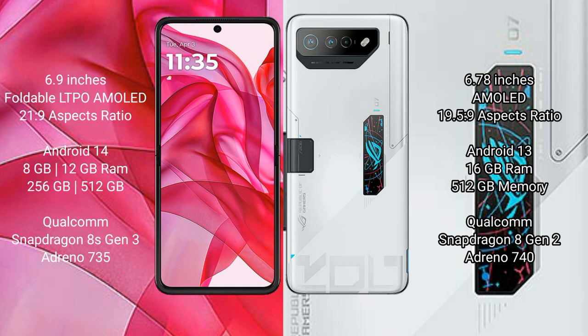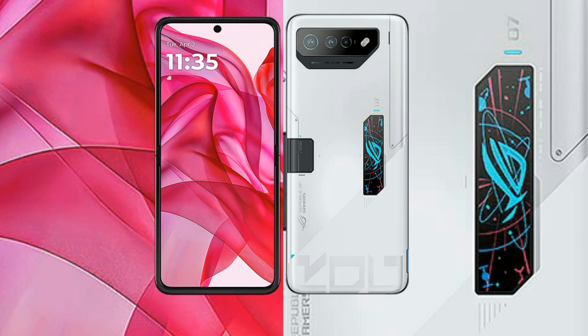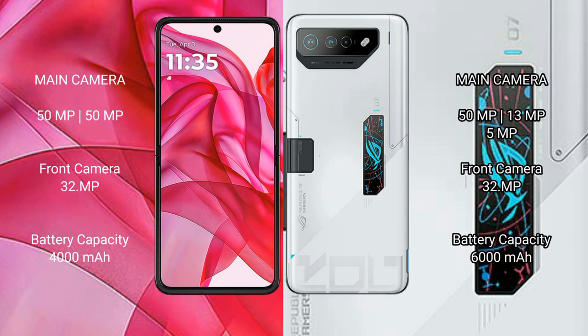The Modular ISR 50 Ultra features the Qualcomm Snapdragon 8s Gen 3 processor and Adreno 735 GPU. The ASUS ROG Phone 7 Ultimate comes with 16GB RAM and 512GB internal storage, powered by the Qualcomm Snapdragon 8 Gen 2 processor and Adreno 740 GPU.